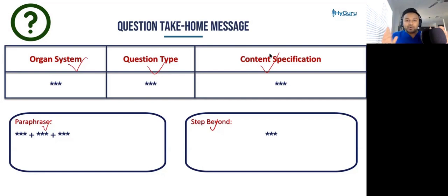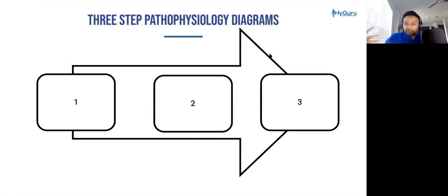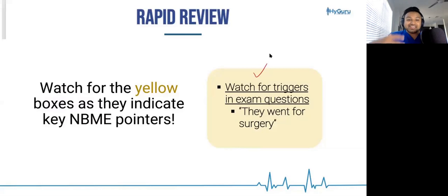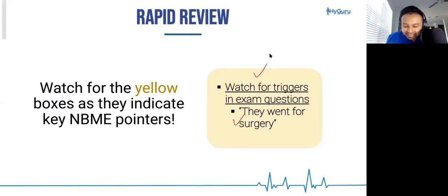I also put in a three-step pathophysiological diagram that explains many different syndromic pathologies — for example, neuroleptic malignant syndrome or serotonin syndrome — broken down into three simple steps. Throughout the course, if you see a yellow box, it contains key NBME pointers, such as: watch for triggers in exam questions — for instance, a patient went for surgery and got malignant hyperthermia. These small boxes are quick golden nuggets you should integrate from a test-taking standpoint.